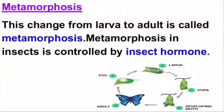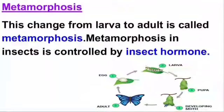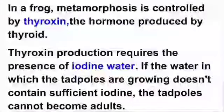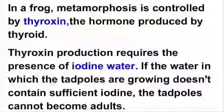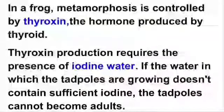Metamorphosis in insects is controlled by a hormone called the insect hormone. The change from larva to adult is called metamorphosis — it is a very important term. Metamorphosis in insects is controlled by insect hormone. In a frog, metamorphosis is controlled by the thyroxine hormone, which is produced by the thyroid gland. In the previous lecture, we learned that the thyroxine hormone is secreted by the thyroid gland. In a frog, metamorphosis is controlled by thyroxine hormone.